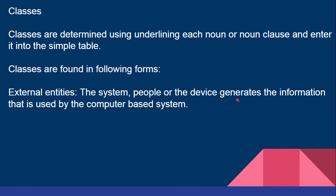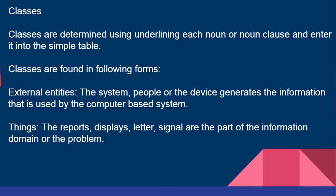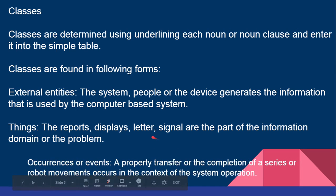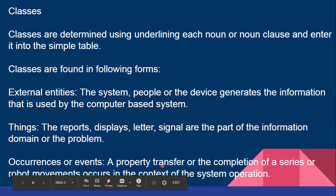Classes can take the following forms: first, external entities — systems, people, or devices that generate information used by the computer-based system. Second, things — reports, displays, letters, signals, or parts of the information domain of the problem. Third, occurrences or events — a property transfer, completion of a series, or robot movements that occur in the context of the system. Any such action is called an occurrence or event. These are all components of classes.